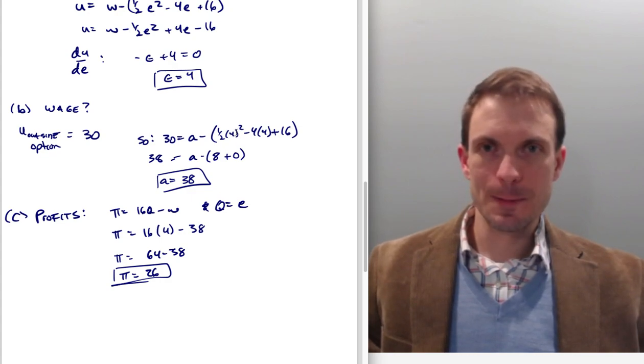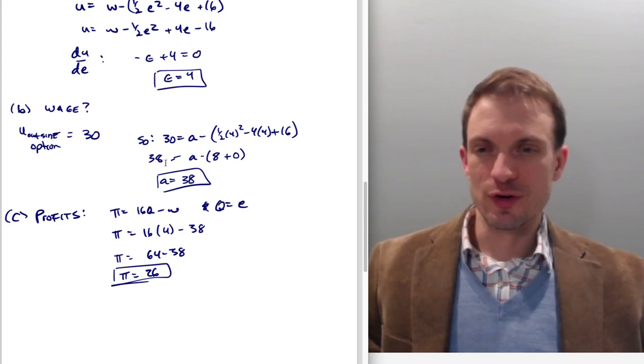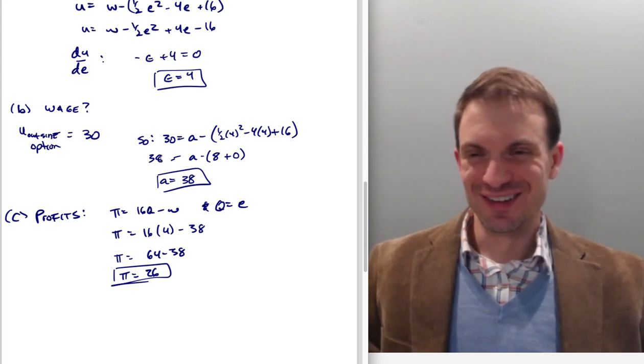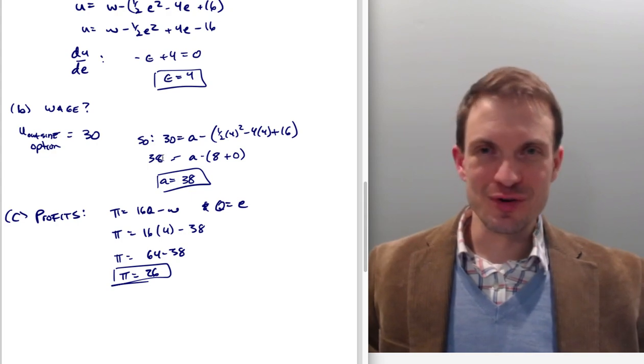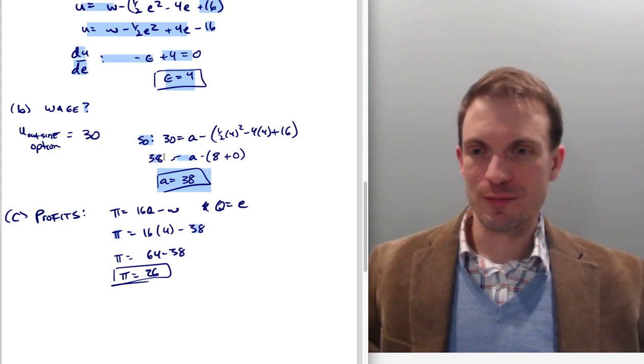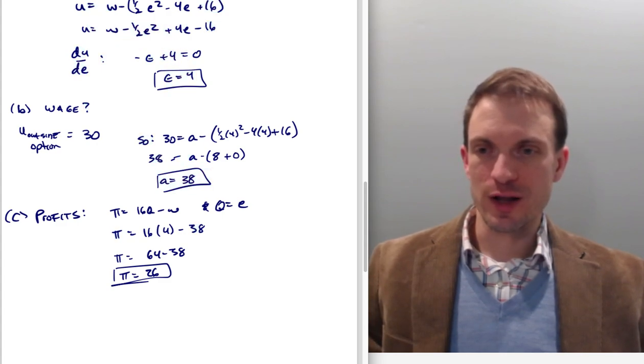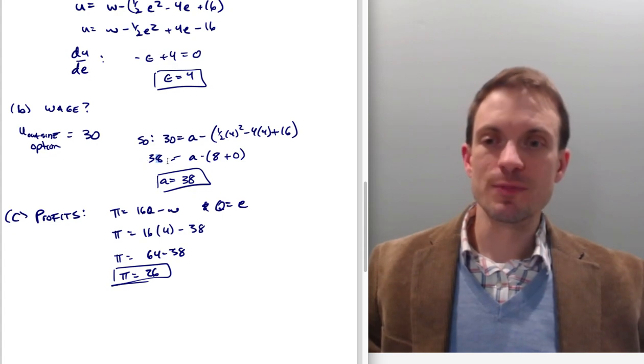Okay, so we have 30 is equal to A minus this expression, which boils down to just 8, right? Because this is minus 16 and positive 16, so this part is just 16, and this drops out. So this part is 16 divided by 2 is 8. Right. And then, so, oops.